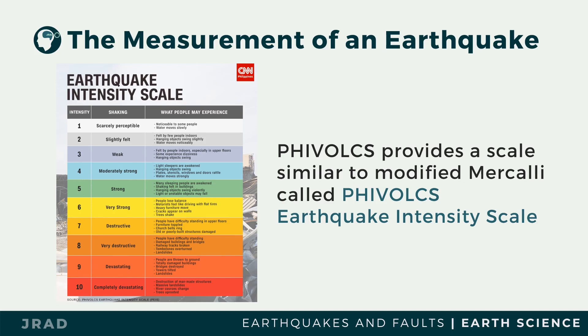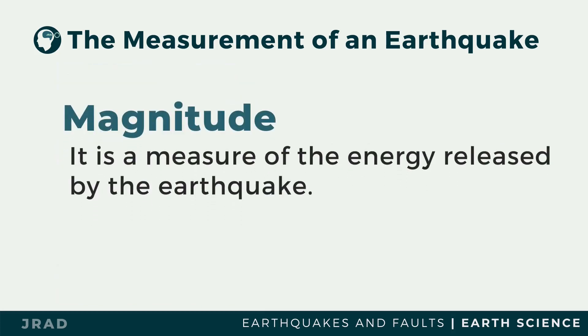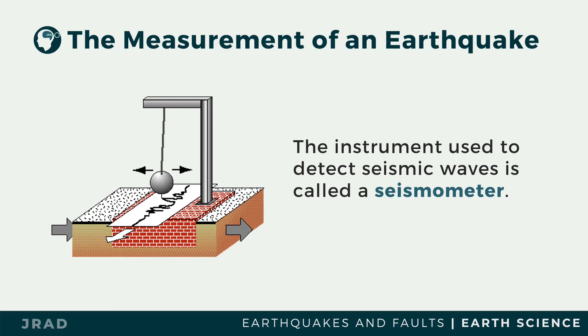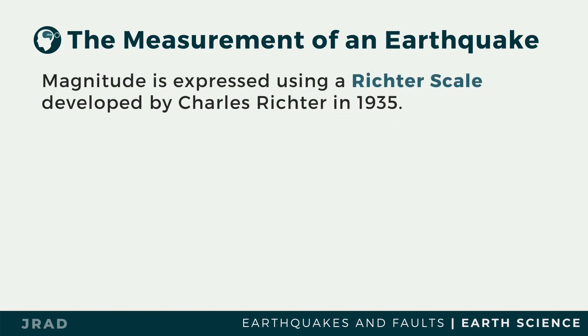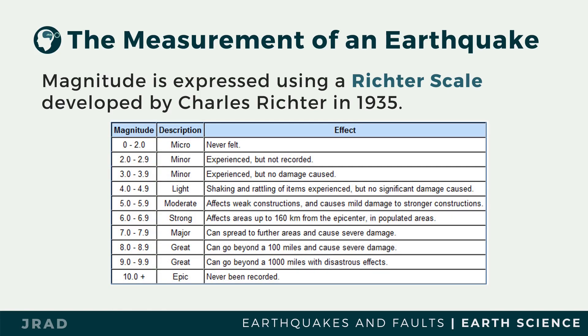Magnitude is the measure of the energy released by an earthquake and is measured by an instrument called a seismometer. A seismometer is attached to a recorder which produces a record of seismic waves. The magnitude is calculated from the height of the largest wave and is expressed on the Richter Scale, which uses Hindu-Arabic numerals with values from 1 to 10.